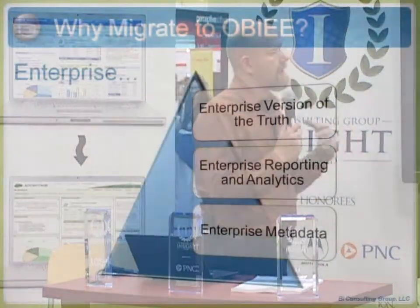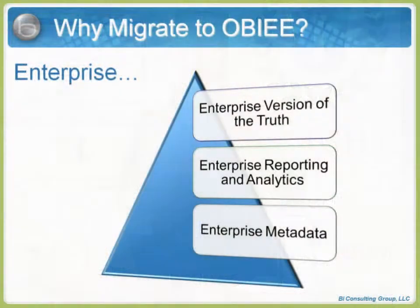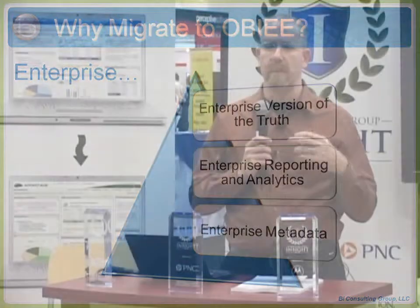The first reason is from an enterprise perspective. OBIE was designed to be an enterprise reporting tool from the ground up. While Hyperion Interactive Reporting had ambitions to be an enterprise reporting tool, the reality is that it never quite succeeded in that manner, because when you design reports in Interactive Reporting, everything has its own unique model. Each BQI, each report has its own model, and if you want to reuse that model multiple times, you have to rebuild it each time you build a new report or a new BQI file.